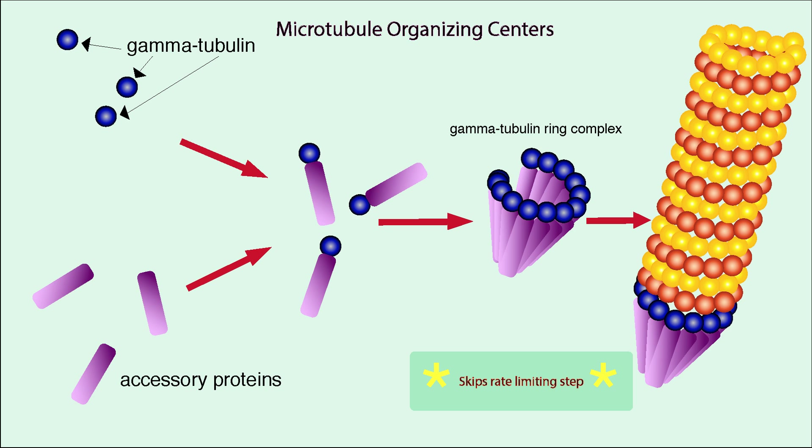This time, however, assembly only occurs at the plus end because the gamma tubulin ring remains at the minus end, blocking the addition of new dimers. As a result, polymerization happens much faster at microtubule organizing centers than anywhere else in the cell.